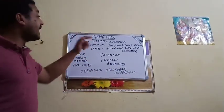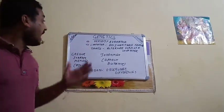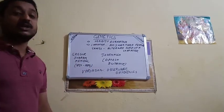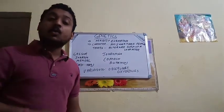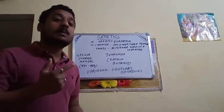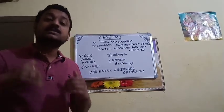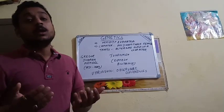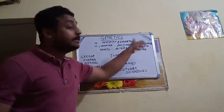Now talking about character — what is a character? Character means any inheritable feature. For example, I have a brownish eye. My brownish eye is expressed in my body and people can see it. I am expressed with a brownish eye — that is an inheritable feature.